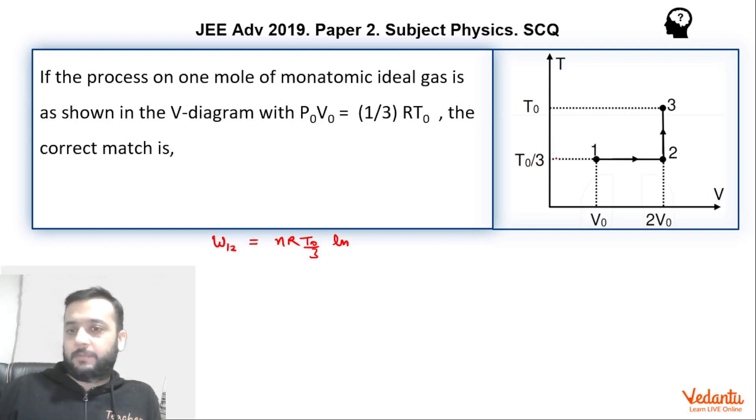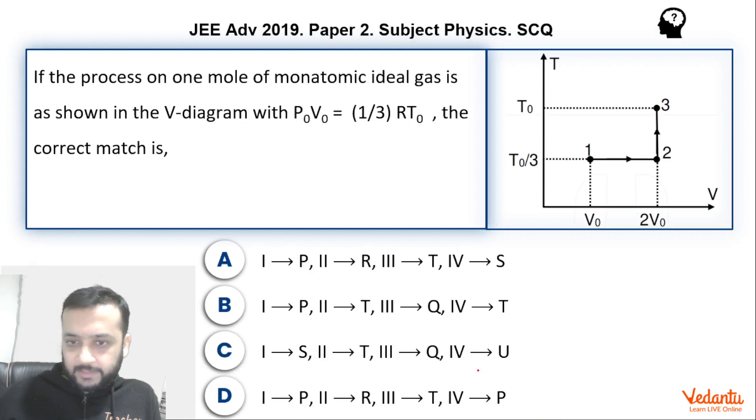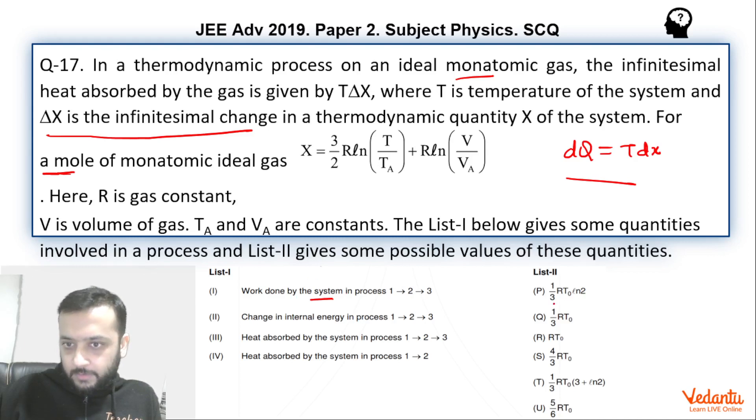So anyway, we are doing by the graph. So here the temperature value is T0/3. So ln(V2/V1). Work done nRT ln(V2/V1). So final volume upon initial volume will be 2. So this will be work done in 1, 2. And work done in 2, 3 will be 0 because it is an isochoric process. So work done in 1, 2, 3 will be nRT0/3 ln 2. So n value is one. So RT0/3 value will be P0V0 ln 2. So 1 RT0/3 ln 2. So 1's match is with P.